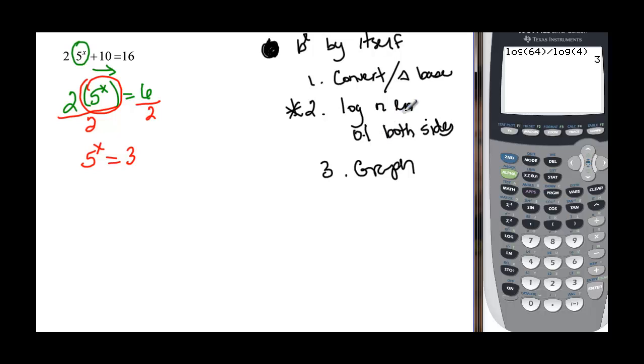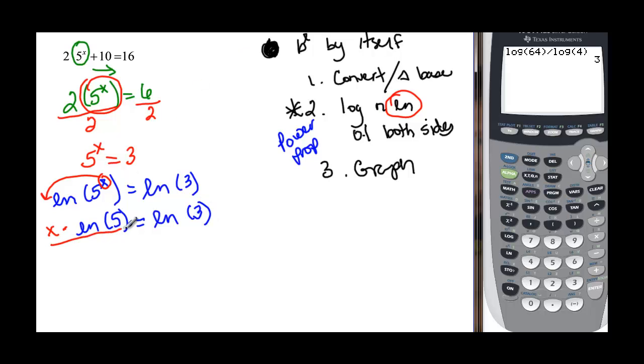I'm going to take the log or natural log of both sides. I usually take the log, so this time I'm going to take a natural log just to be different. So the natural log of 5^x, remember it doesn't matter which kind we take, is equal to the natural log of 3. We're using the power property here, and the power property says that we have to take the exponent and it can become the coefficient. So x times the natural log of 5 is equal to the natural log of 3. If we divide by the natural log of 5 on both sides, we have x equal to natural log of 3 divided by natural log of 5. That's our exact answer and we can call it done.